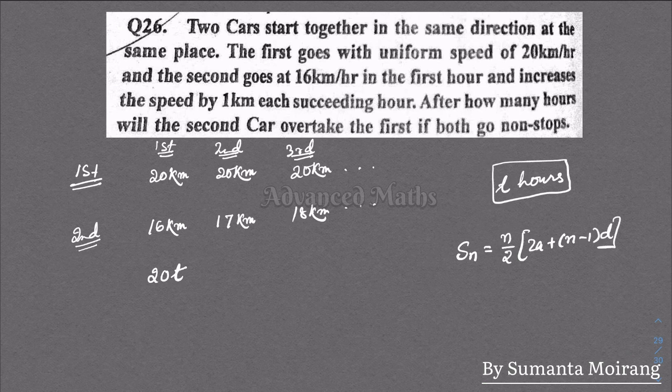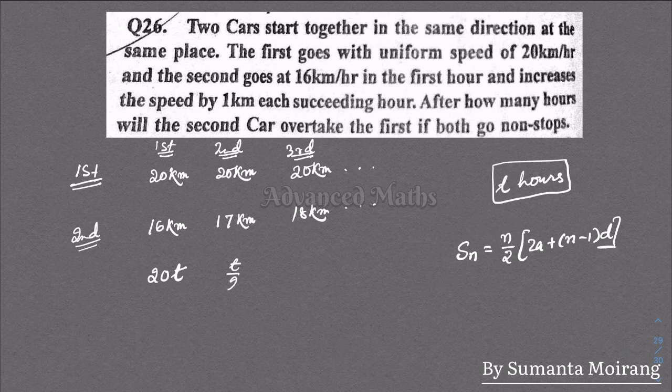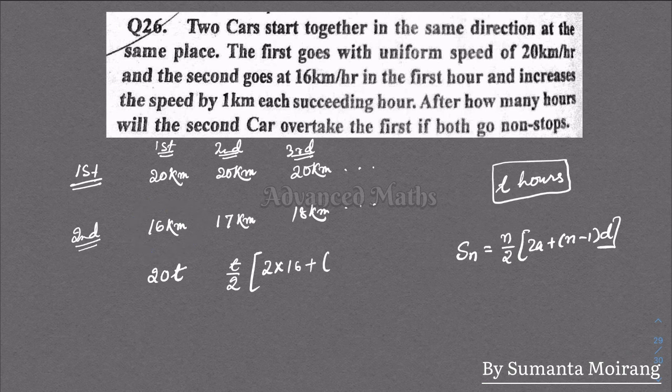Where n is the number of hours t, a is the first term which is 16, and d is the common difference.